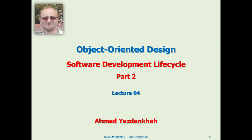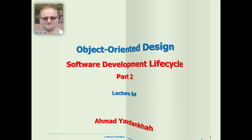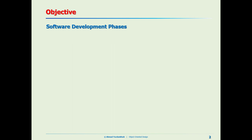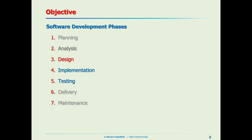Hey guys, this is the second part of the Software Development Lifecycle. We learned in the previous lecture that software development phases are seven — we divided the whole process into seven phases. We said planning is out of our scope, we talked about analysis, and now this time we want to talk about design.